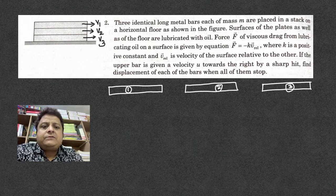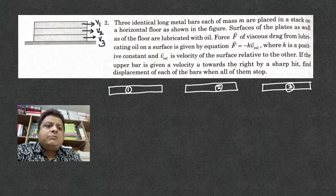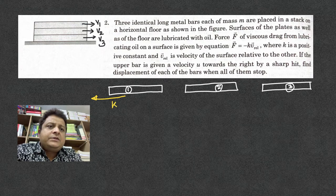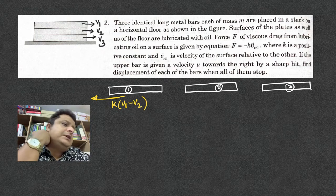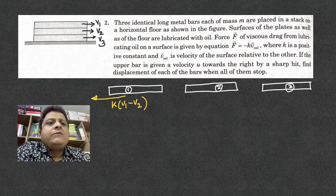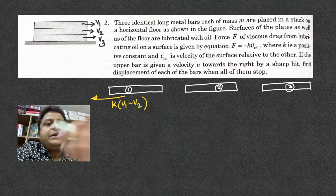Now what are the viscous forces? Let us see. On the upper bar, viscous force will be k times, if v1 is greater, then v1 - v2. As it is velocity of the layer relative to the other, that is k into v1 - v2.